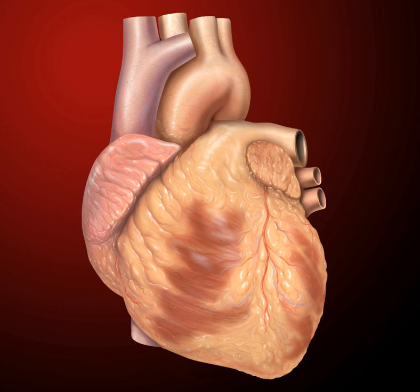Humans have known about the heart since ancient times, although its precise function and anatomy were not clearly understood. Ancient Greeks are considered to have had the primary seat of scientific understanding of the heart in the ancient world. Aristotle considered the heart to be the organ responsible for creating blood, Plato considered it as the source of circulating blood, and Hippocrates noted blood circulating cyclically from the body through the heart to the lungs.